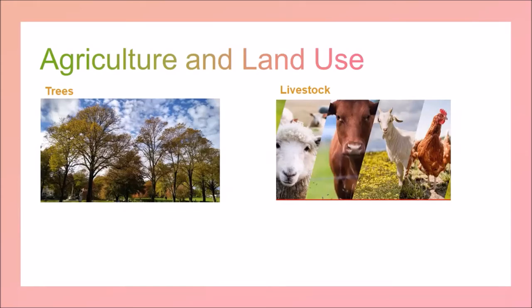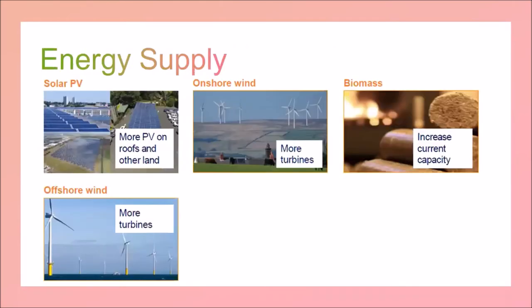The model also advocates a 0.2% reduction in livestock every year. On energy supply — slightly separate because everything else has been about consumption and emissions — this is how to supply the new, much more electrified energy scenario. We need more PV on roofs and land, more onshore wind turbines, increasing biomass and offshore wind. In SCATTER, the national figure for meeting our energy needs is taken and divided up by renewable energy generation based on land area — very crude, but it gives a rough idea.